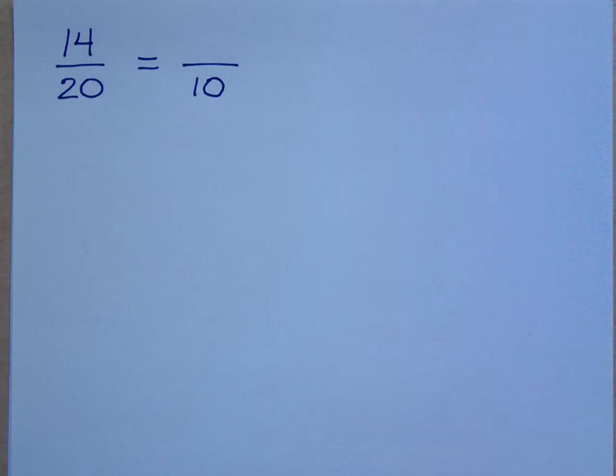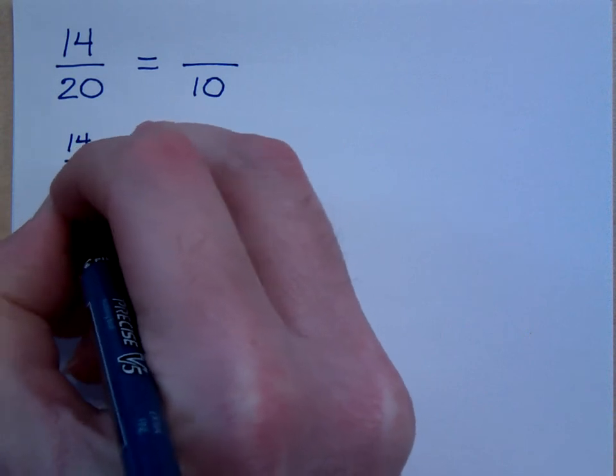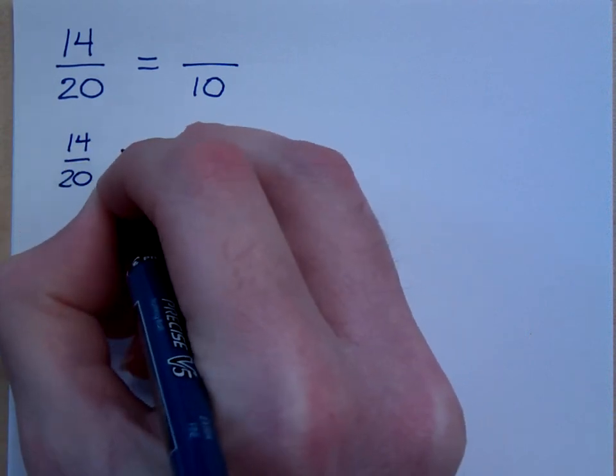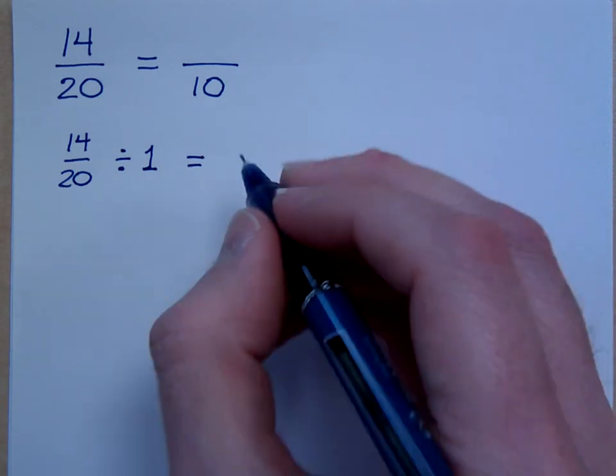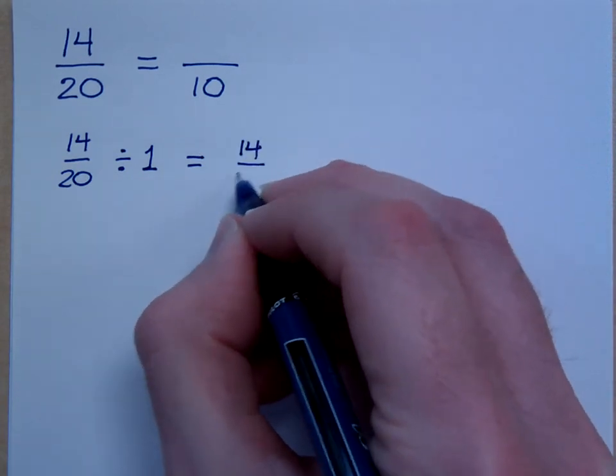I can. Because, you notice how I multiply times 1 and that didn't change anything? You know what else you can do? You can divide by 1. Think about this. If I have 14 over 20 and I divide this guy by 1, dividing by 1 is nice because you just get the number you started with, which would be 14 over 20. Do you all agree?